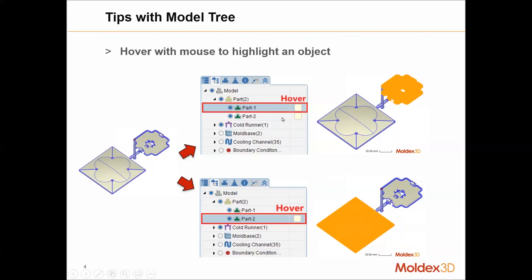So take this for example. There are two parts in the model. When you hover on the first part, the part will be highlighted. And when you hover on the other, the other will be highlighted. So when you want to find the one that you want to choose, you can use this trick to look for the right one.